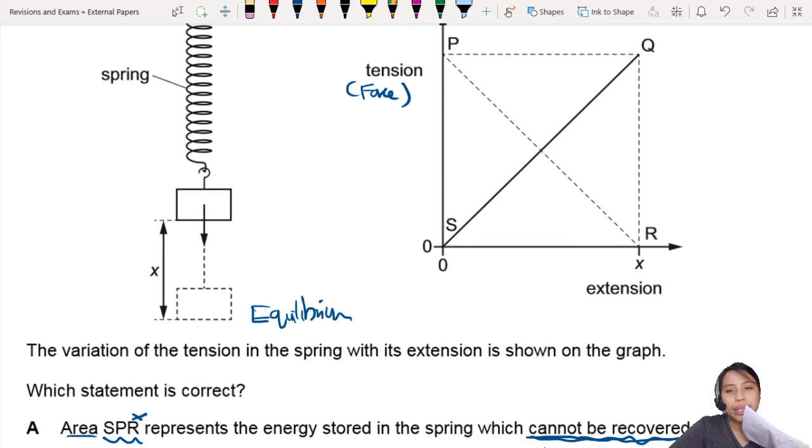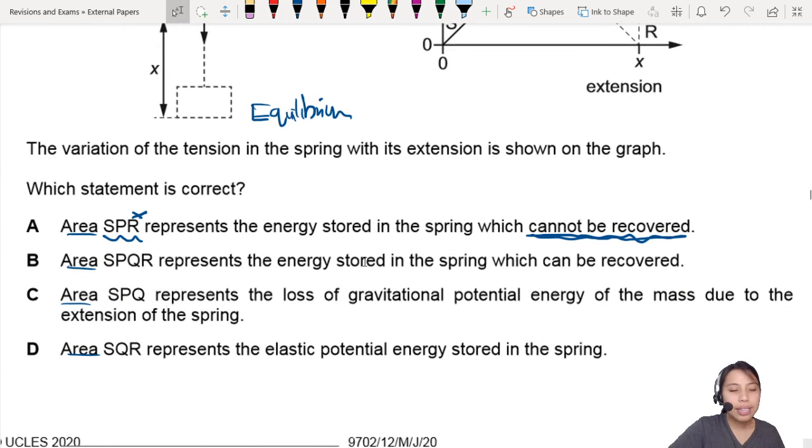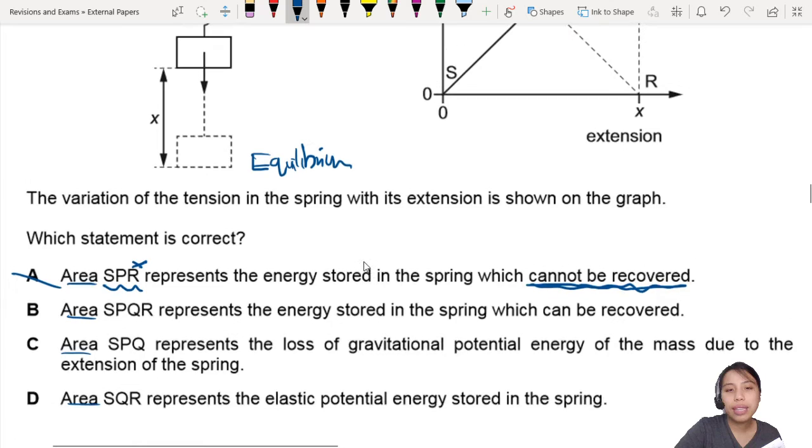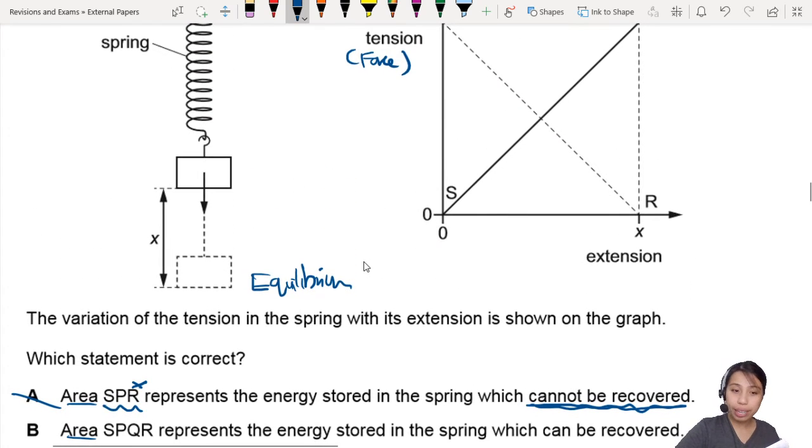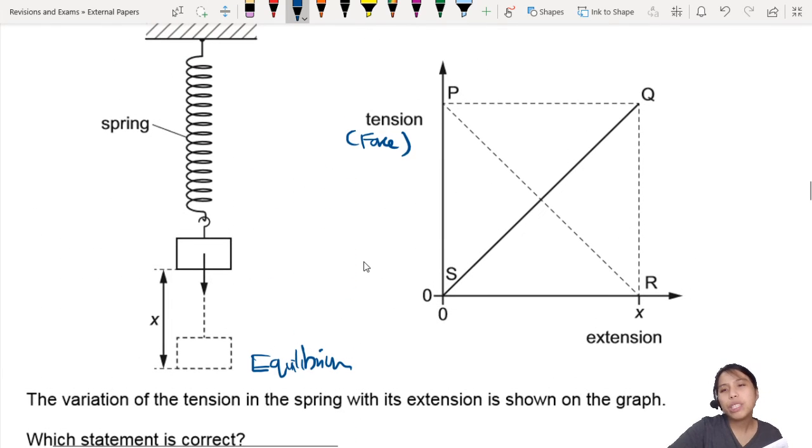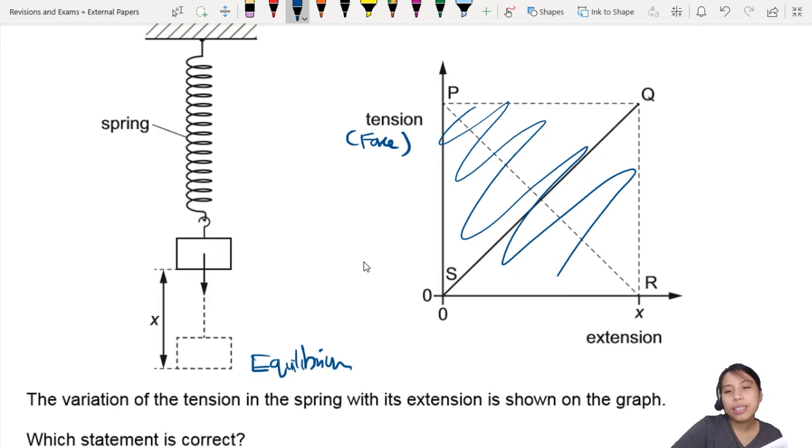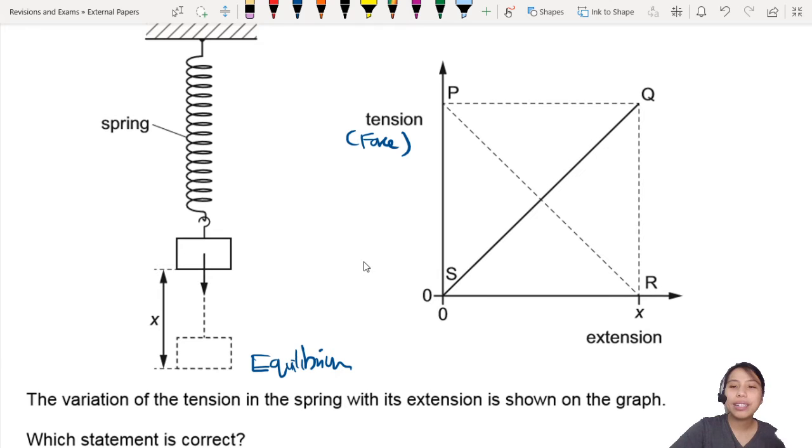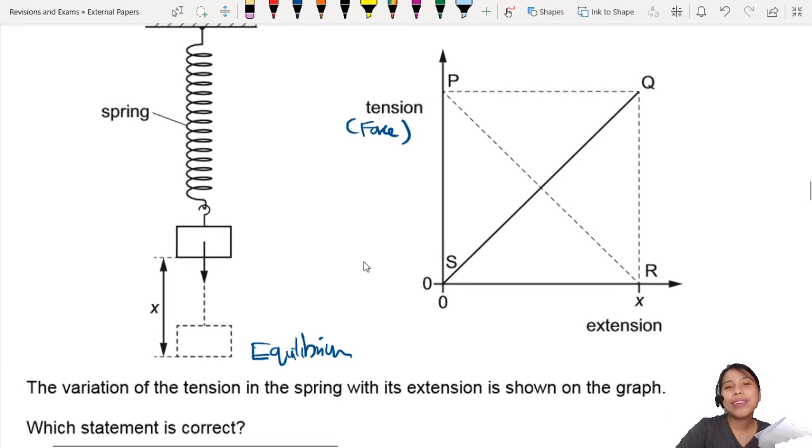So yep, I don't think A is the answer you're looking for. Let's look at B: Area SPQR is the energy stored in the spring which can be recovered. What is SPQR? SPQR is the whole triangle. We need area under the curve guys, not area of the whole thing. So area under the curve really means area between line and extension axis.